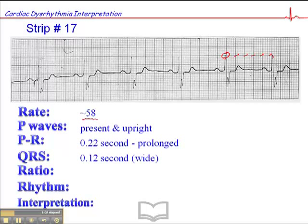Now the QRS is wide — about 0.12 seconds. It might even be longer than 0.12 seconds because the QRS begins here, falls on the dark line right there, and ends about right there. So that's at least three small squares, if not three and a half or four. So we have a wide QRS, and the ratio of P waves to QRS is one-to-one.